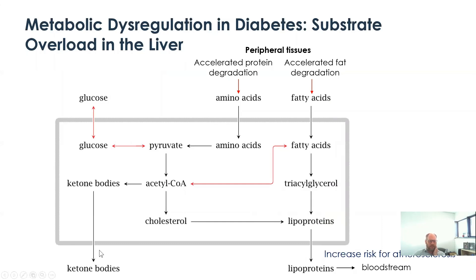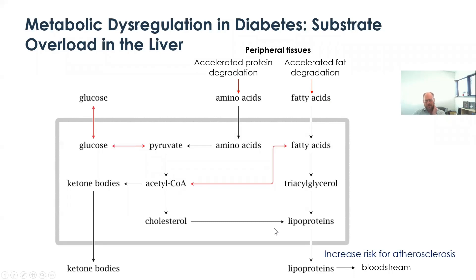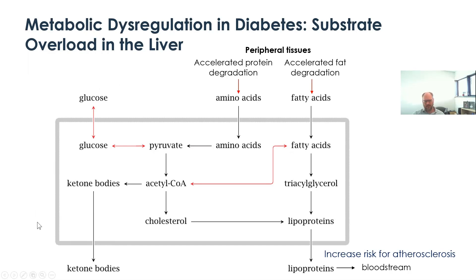This ultimately results in a major substrate overload in the liver. There is accelerated degradation of proteins in the periphery and accelerated degradation of fats. These end up as lipoproteins or free fatty acids that come into the liver. There is also significant production of ketone bodies — starvation fuels — because acetyl-CoA is carboxylated by acetyl-CoA carboxylase. So diabetics, even though they are swimming in glucose, have a body that is producing ketone bodies.